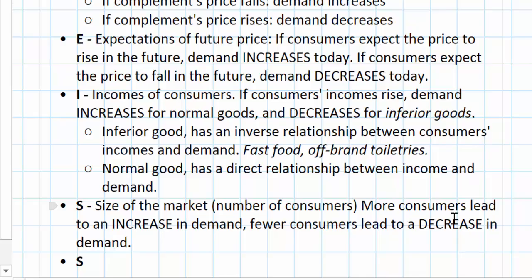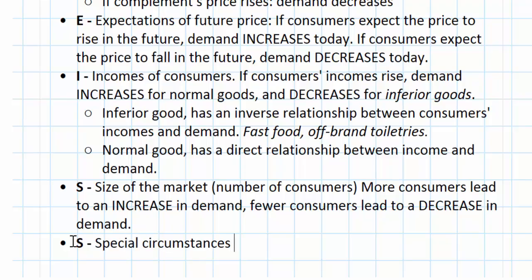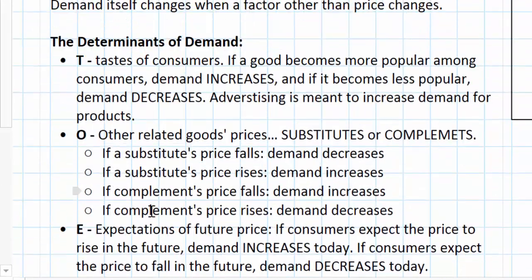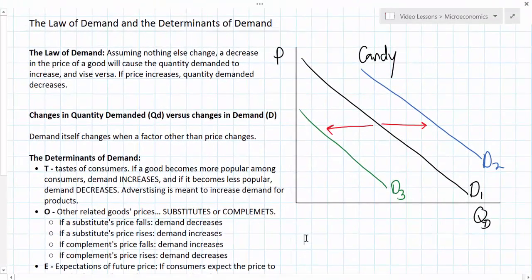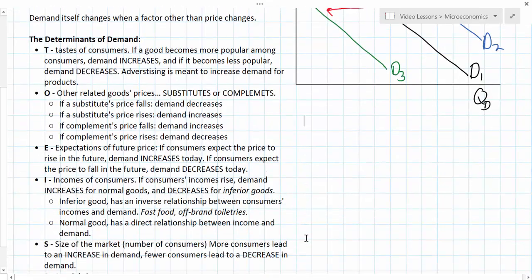There's one more to mention, although it is not necessarily a specific determinant of demand — it is a basic concept to keep in mind. There might be some special circumstances that affect demand for different goods. A simple example could be the weather. In our candy market, when the weather is particularly hot, colder frozen candies might be in greater demand while chocolates might be in less demand because chocolate tends to melt in the heat. Different factors that affect consumer behavior drive the demands for different goods.